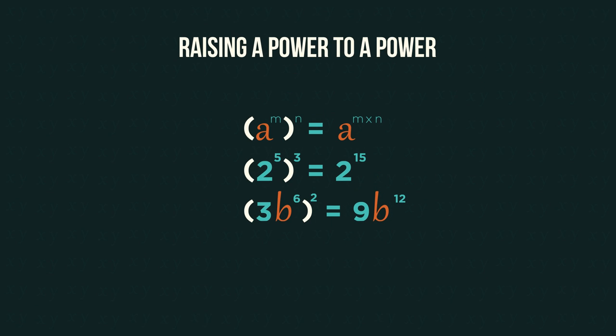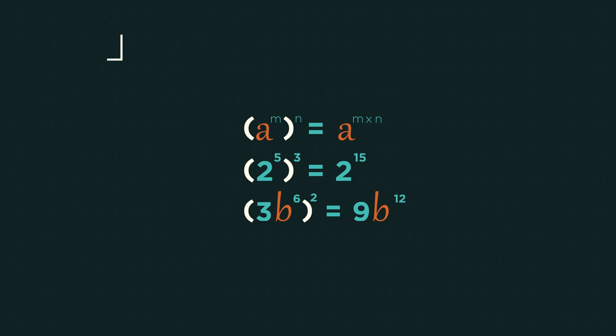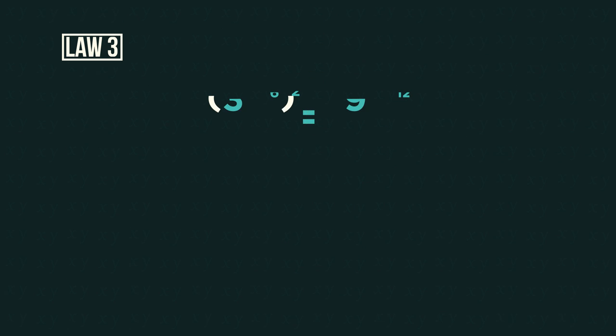So what do you notice about these three? When powers are raised to a power, we multiply the powers together. On this one, be a little careful. Don't forget, because the three is also inside the brackets, it needs squaring too, hence nine. But then six multiplied by two is twelve.